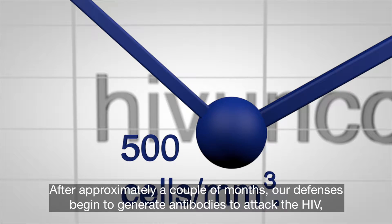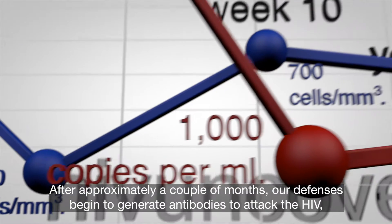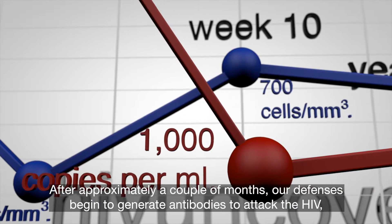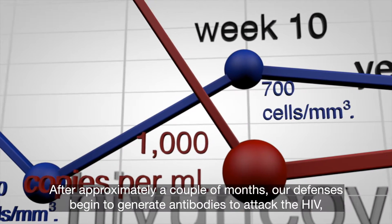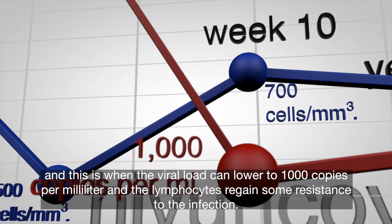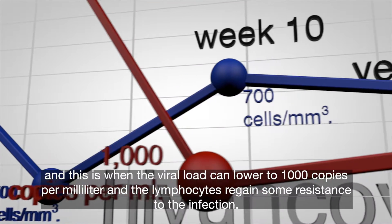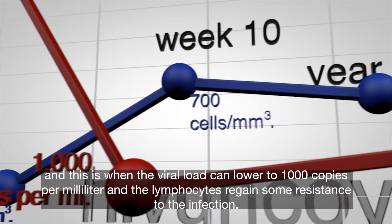After approximately a couple of months, our defenses begin to generate antibodies to attack the HIV. This is when the viral load can lower to around 1,000 copies per milliliter and the lymphocytes regain some resistance to the infection.